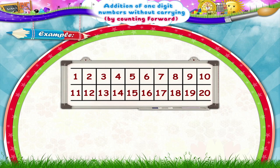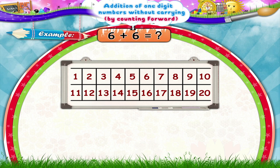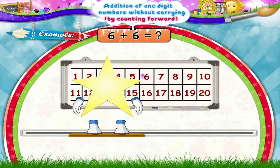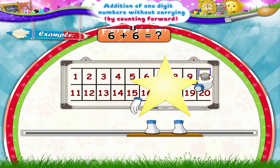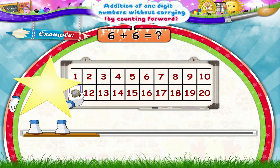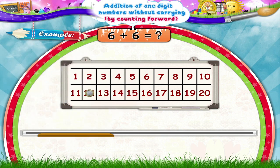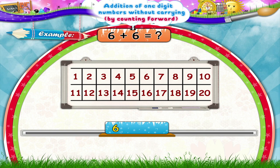Now use the square and add the following. What will be 6 plus 6? From which number should we start? Yes, 6. Then we move ahead 6 squares. Which number do we reach? Yes, 12. So we get 6 plus 6 equals 12.